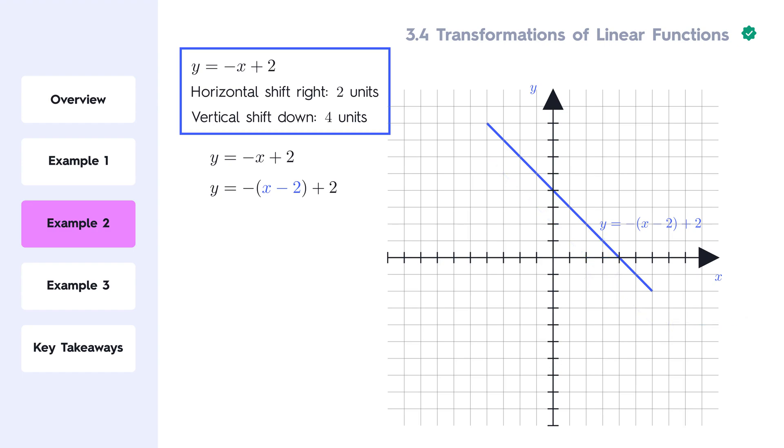Next, we apply the vertical shift by subtracting 4 from the function's output. Now, let's simplify the equation.